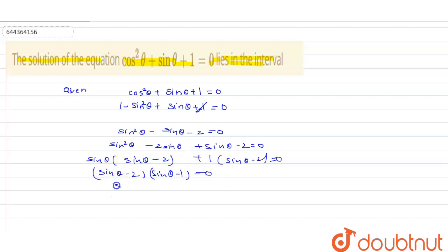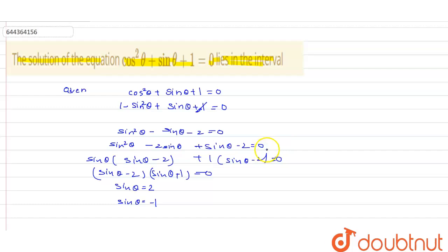From here, we have sinθ = 2 or sinθ = −1. The range of the sine function is −1 ≤ sinθ ≤ 1. Hence, sinθ = 2 is not valid. The only valid solution is sinθ = −1.